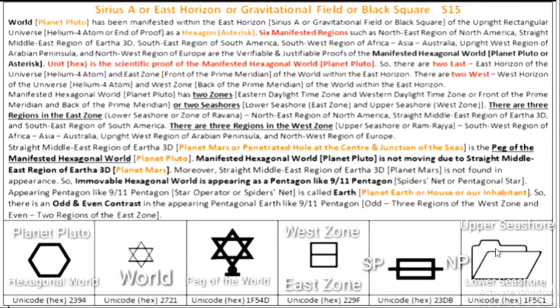So there are three ascending stairs: ground stair, middle stair, mountain top stair — Kepler's minor axis, Kepler's semi-major axis, and Kepler's major axis — superscript 1, superscript 2, and superscript 3. There is an even and odd contrast like H2O in the manifested hexagonal world appearing as a pentagonal earth like 9-11 Pentagon with three ascending stairs within the East Horizon zone of the upright rectangular universe — that is, two stairs of the upper seashore and one stair of the lower seashore.